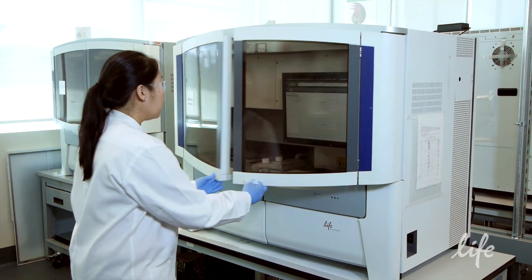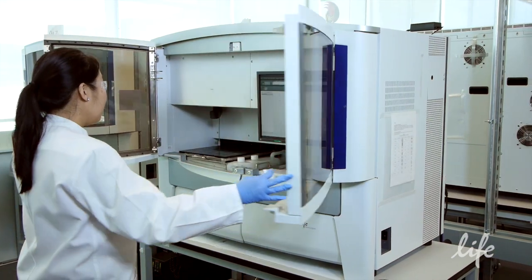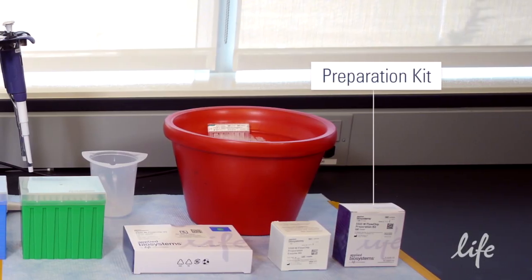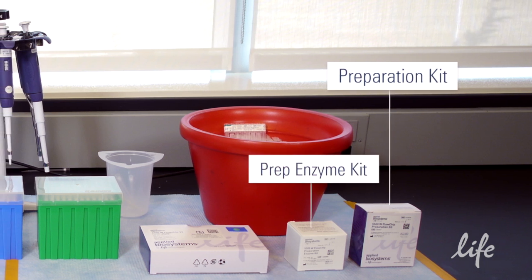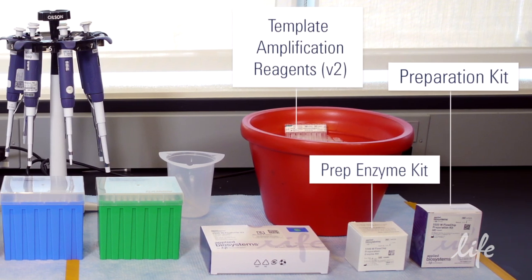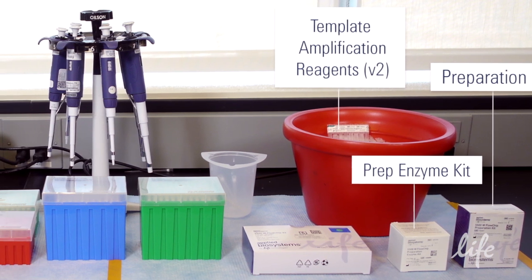Before getting started, make sure you have the following materials: A 5500 Wildfire Flowchip Preparation Kit, a 5500 Wildfire Flowchip Prep Enzyme Kit, and 5500 Wildfire Template Amplification Reagents Version 2.